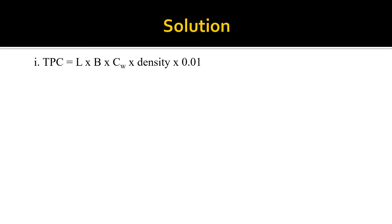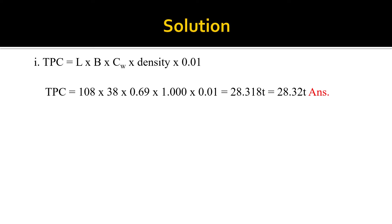We start with TPC. The TPC formula is: length × breadth × CW × density × 0.01. Substituting the values: 108 × 38 × 0.69 × 1 × 0.01, which gives us 28.318, or using two decimal places, 28.32 tons.